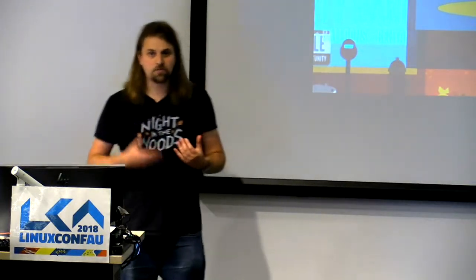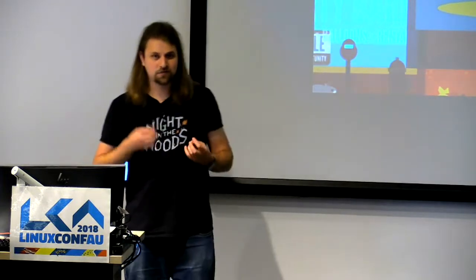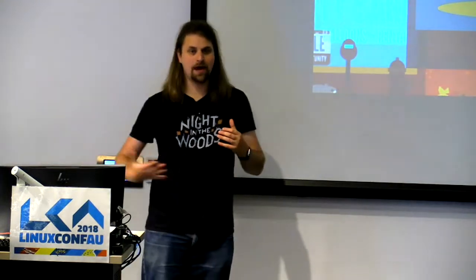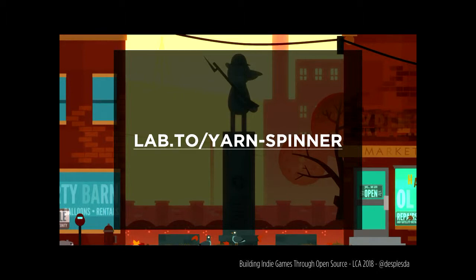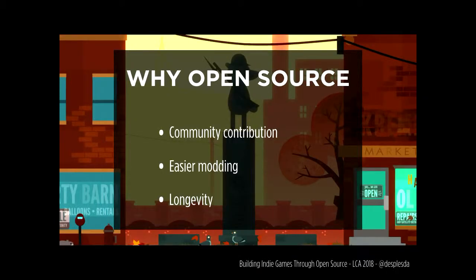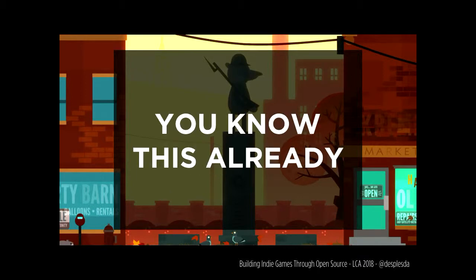Yarn Spinner was released as open source under the MIT license from the get-go, which meant all that work was done in public. Any features that were added were done as per the requirements of the game — when Alec told me he needed a certain feature, for example tagging certain lines for localization, that just got merged into mainline. You can find the project at lab.to/yarnspinner — there's a dash between the words yarn and spinner. There are a number of reasons why open source was a tremendously good fit for this project: community contributions, easier modifications, longevity for the project.